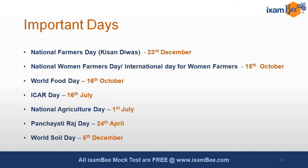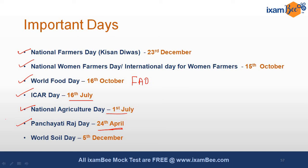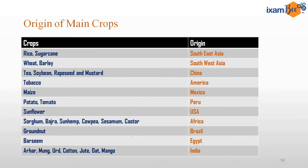Important national and international days: National Farmers Day is celebrated on 23rd December. National Women Farmers Day is celebrated on 15th October. World Food Day is celebrated on 16th October — this is also the foundation day of FAO (Food and Agriculture Organization), headquartered in Rome, Italy. ICAR Day, when ICAR was established, is 16th July. National Agriculture Day is celebrated on 1st July. Panchayati Raj Day is 24th April — this has been asked several times in the exam.